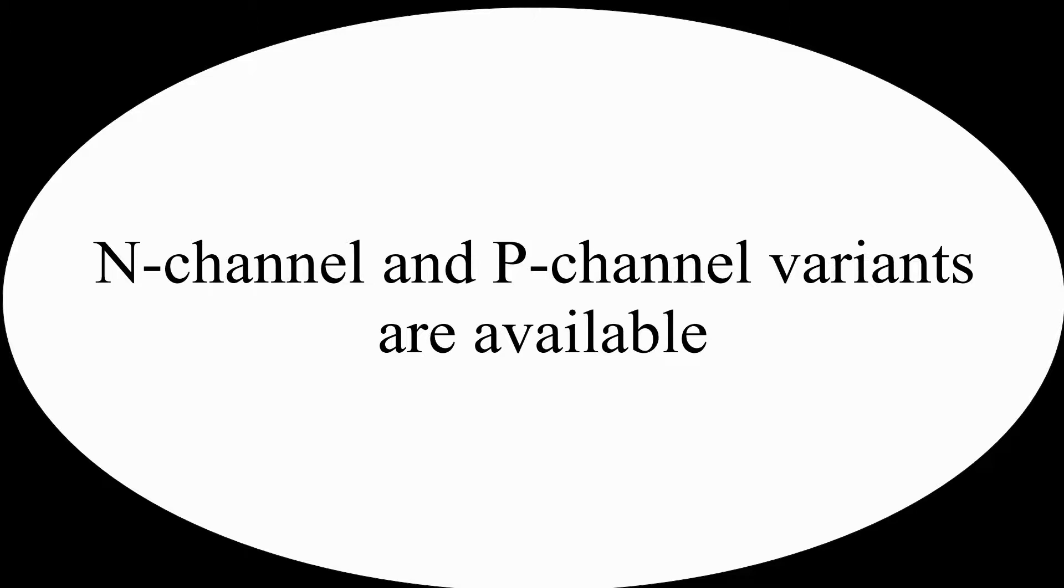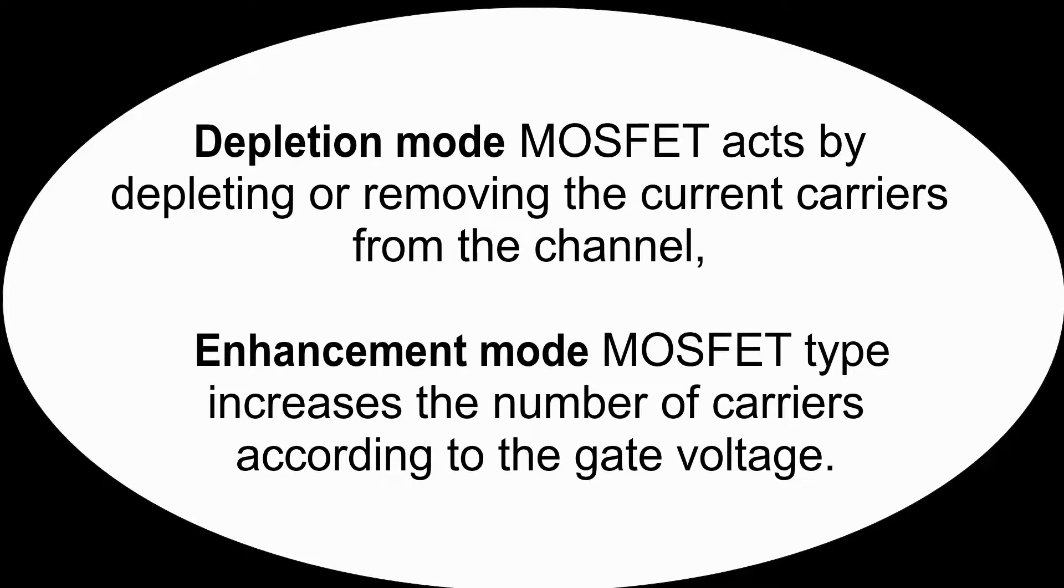N-channel or P-channel: Both N-channel and P-channel variants are available in MOSFET. Enhancement and depletion: Both enhancement and depletion types are available. As the name suggests, the depletion mode MOSFET acts by depleting or removing the current carriers from the channel, whereas the enhancement type increases the number of carriers according to the gate voltage.